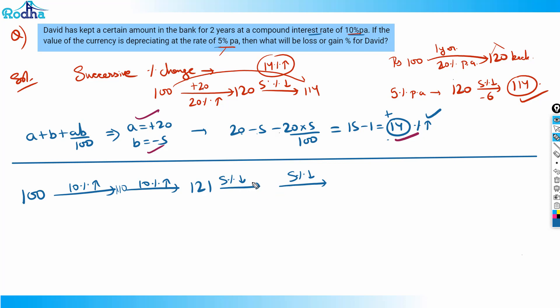You can see here that 121, now 5% decrease and 5% decrease. Best way is to do by successive change, very simple. 5 and 5 decrease, so a equals minus 5, b equals minus 5. What is the formula? a plus b plus ab by 100. Minus 5 minus 5, and minus minus becomes plus, so plus 5 into 5 by 100.